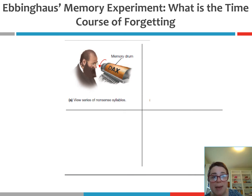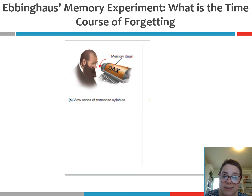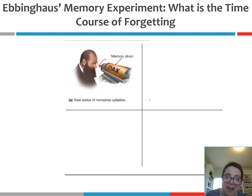What Ebbinghaus did is he used what's called a memory drum — an old-fashioned apparatus that would display each item or each nonsense syllable. He would turn the drum and it would turn over and another word would appear. It's basically an old-time apparatus that took the place of what we now use computers for.